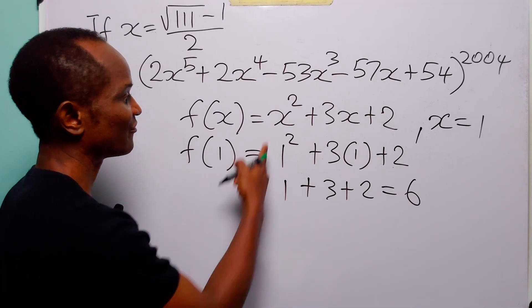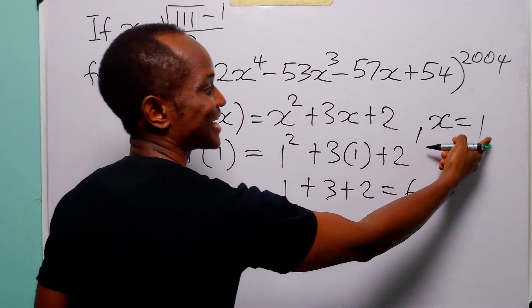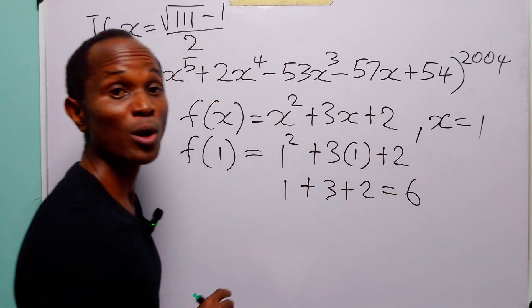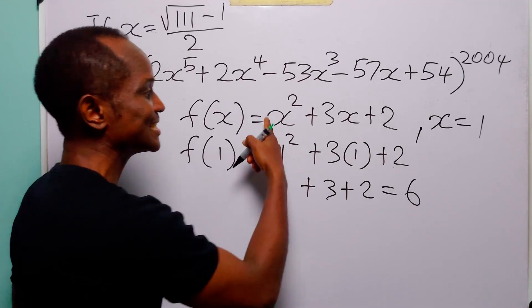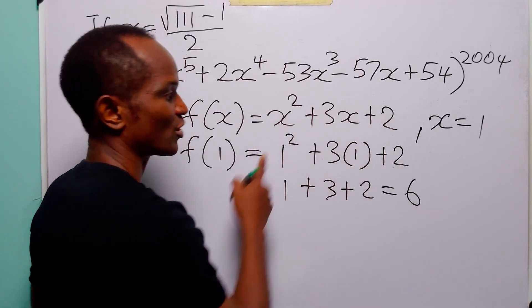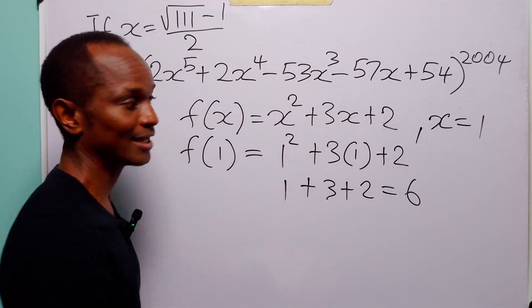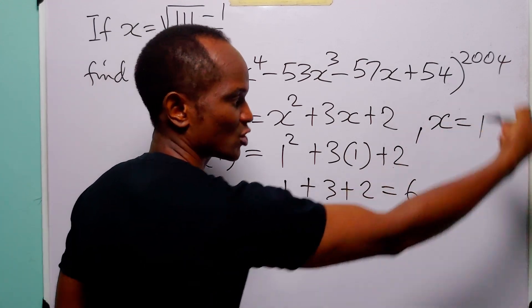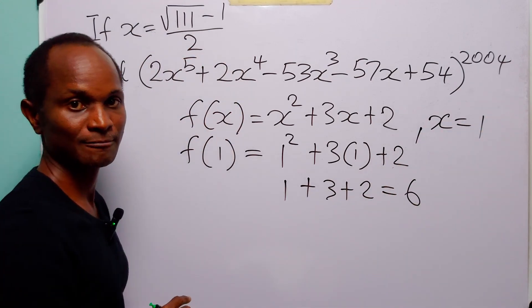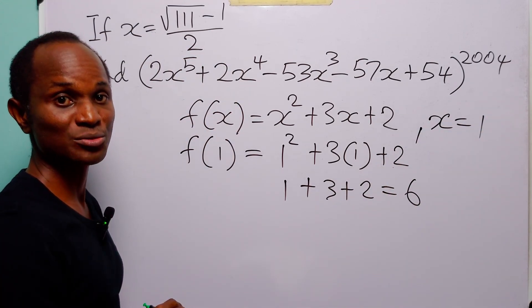The Remainder Theorem says that the value of this function at x = 1 is the remainder when this function is divided by (x − 1). Now let us see if this is true.